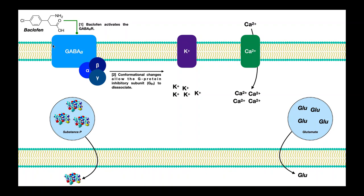But let's suppose we introduce a GABA-B receptor agonist such as baclofen — here's its chemical structure. This is a drug used in the treatment of spasticity. The GABA-B receptor agonist binds to the GABA-B receptor and triggers conformational changes in the protein. Those conformational changes allow the G protein inhibitory subunit to dissociate.